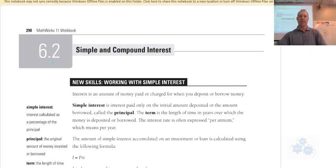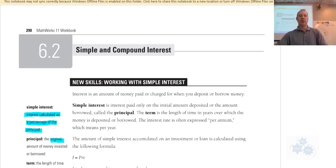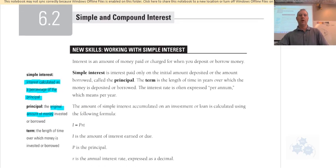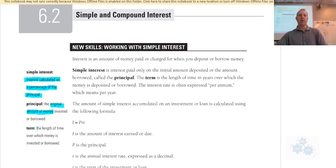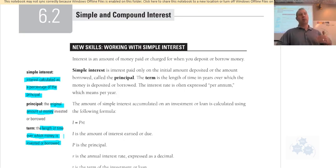Simple interest is interest calculated as a percentage of the principal. The principal is the original amount of money that was invested or borrowed — that's all in your workbook on page 290. Another definition we need is the term, which is the length of time over which the money is invested or borrowed. So if I borrow five thousand dollars to buy a car, there's a term attached — how much time do I get to pay it back, like five or seven years.